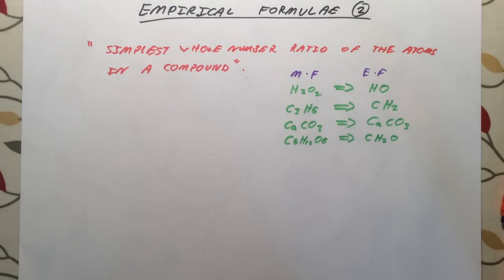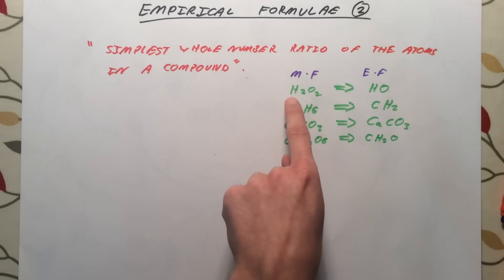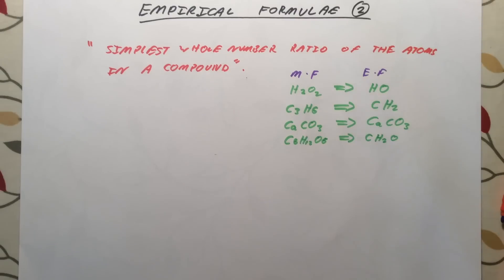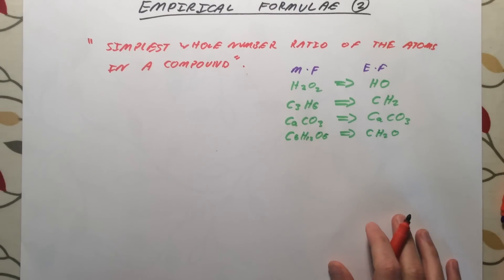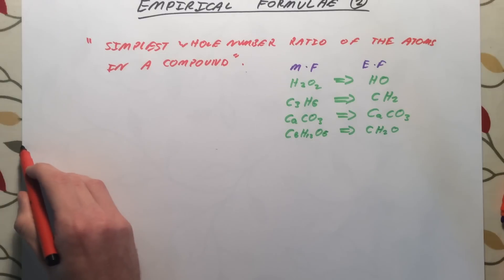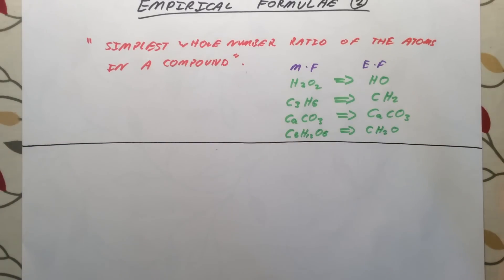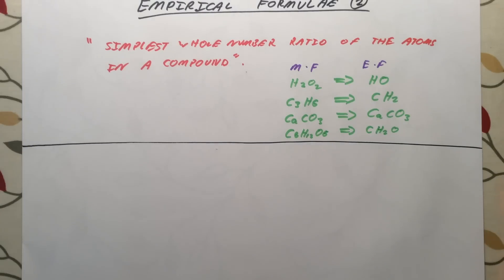Now, for foundation tier, this is generally what you will be asked — simply being able to write a molecular formula as an empirical formula. However, both on foundation and higher, you can also be asked to do some empirical formula calculations, where given the percentages that different elements contribute to the mass of a compound, you work out the empirical formula.